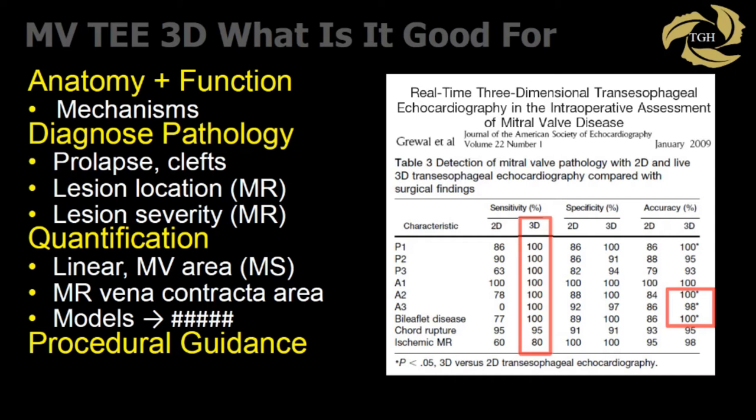We can use 3D for quantification — obtaining more accurate linear measurements, mitral valve area in mitral stenosis, mitral regurgitation vena contracta area, and models. Models give us numbers — and whether those numbers are relevant really depends on your practice. Importantly, it helps guide procedural guidance as well. There are several good papers that look at the benefit of 3D, and there's no question it does provide benefit — mostly in the location and diagnosis of pathology.